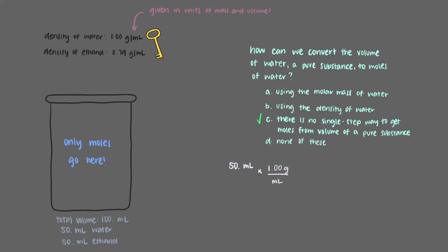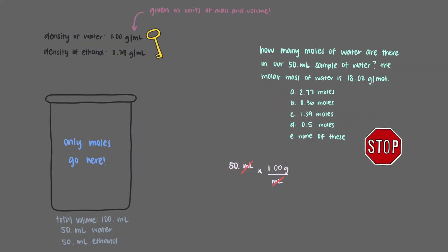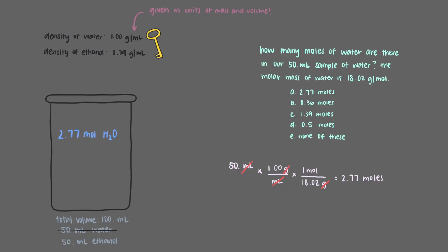We'll multiply the 50 milliliters of water by the density of water, making sure to cancel out the milliliter units. Just like that, we went from volume to mass. But we want to know how many moles of water we have, so we need to do one more step. The molar mass of water is 18.02 grams per mole. The last step in our conversion is to multiply by the molar mass, making sure to cancel out the gram units so that it leaves us with moles. Once we multiply everything out, we get that there are 2.77 moles of water in 50 milliliters. Note that we're keeping one more digit of precision than the number of significant figures, which is 2, to avoid round-off errors later in the problem.